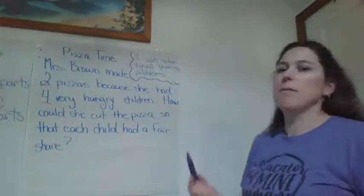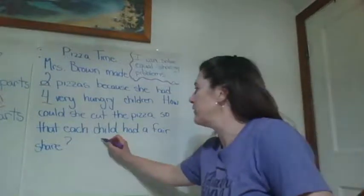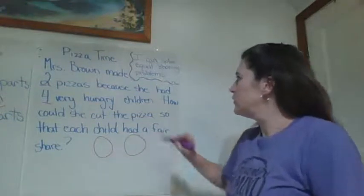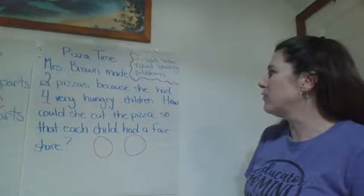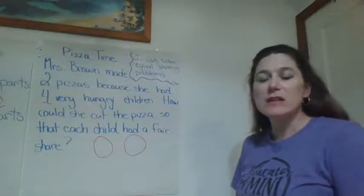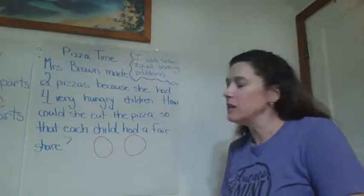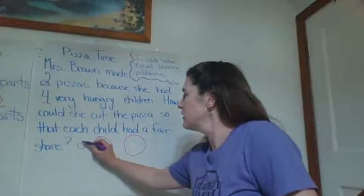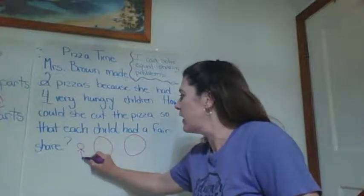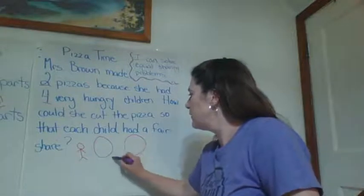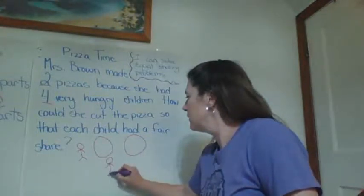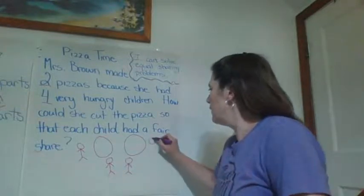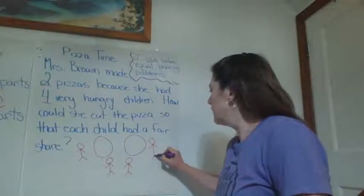So Mrs. Brown made two pizzas. Let's do our picture — let's go ahead and draw. We have one pizza, two pizzas. And she also had four very hungry children, so let's go ahead and draw children. Remember, when we're doing our math drawings, we really don't need to have details. So I'm just going to draw some little stick figures. Here's one hungry child, two hungry child, three hungry child, and four hungry child.